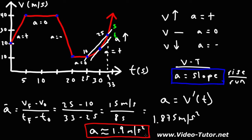That's how you approximate the instantaneous acceleration at a point using the average acceleration formula. The closer the two chosen points are to the point of interest, the more accurate the estimation will be. So remember: the acceleration is the slope of the velocity time graph. For more example problems on velocity time graphs, acceleration time graphs, and position time graphs, check out the links in the description below.